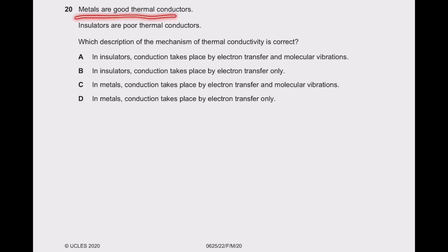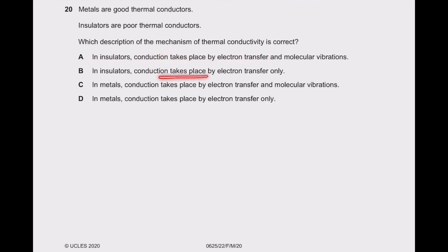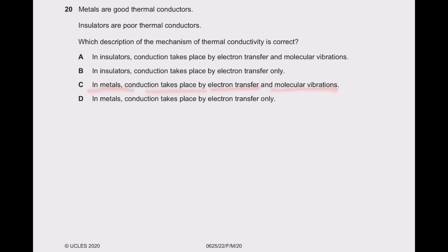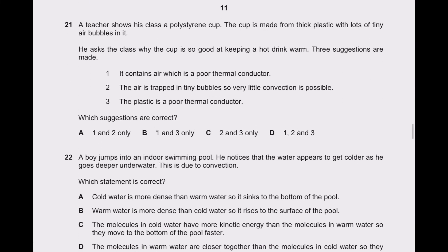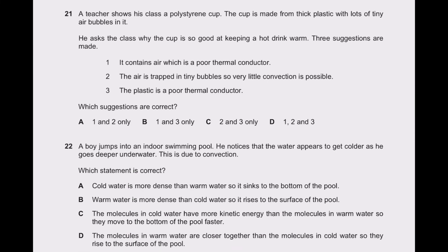Question 20: metals are good thermal conductors. In insulators, conduction does not take place by electron transfer — insulators are poor conductors. In metals, conduction takes place by electron transfer only. Option C is the best suitable answer.